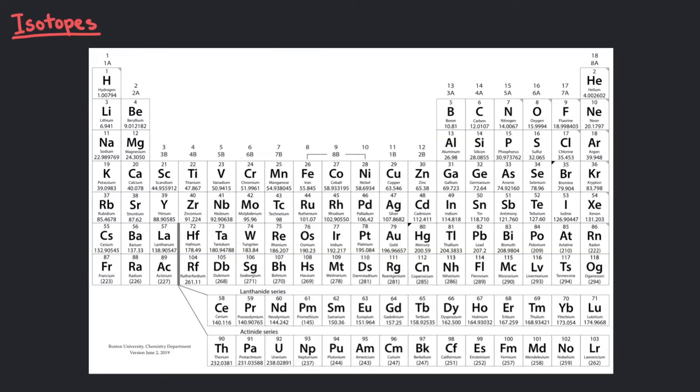In a previous video, we studied the squares on the periodic table to understand the nature of atoms. But there was one number that we didn't discuss. Let's look closer at the carbon square.